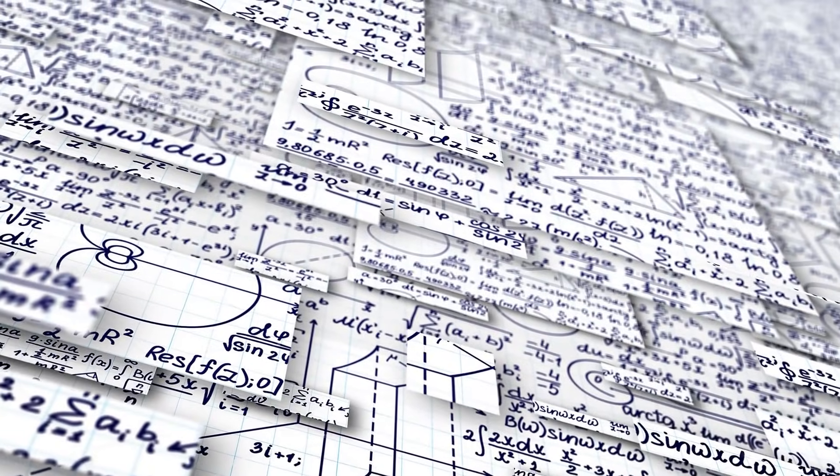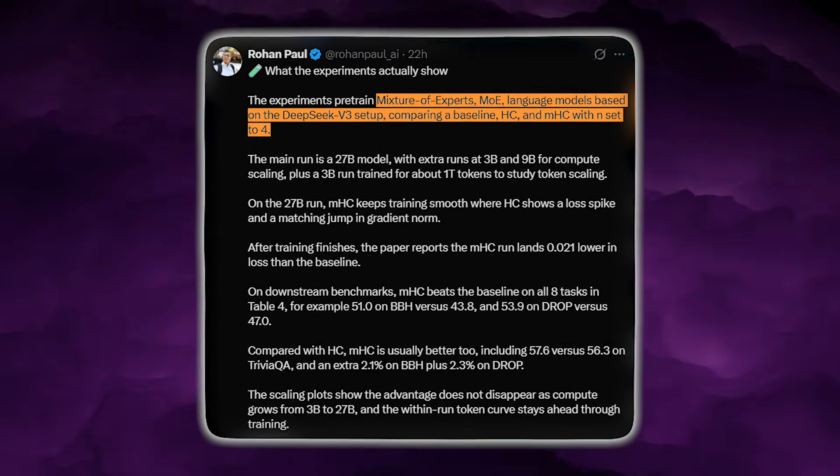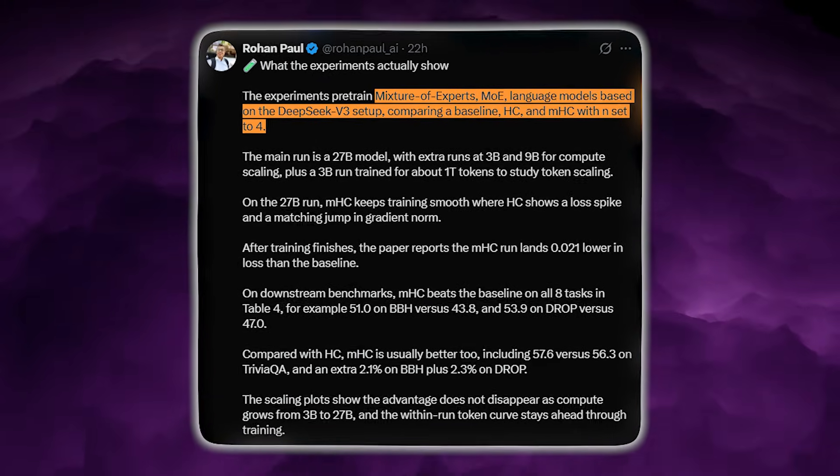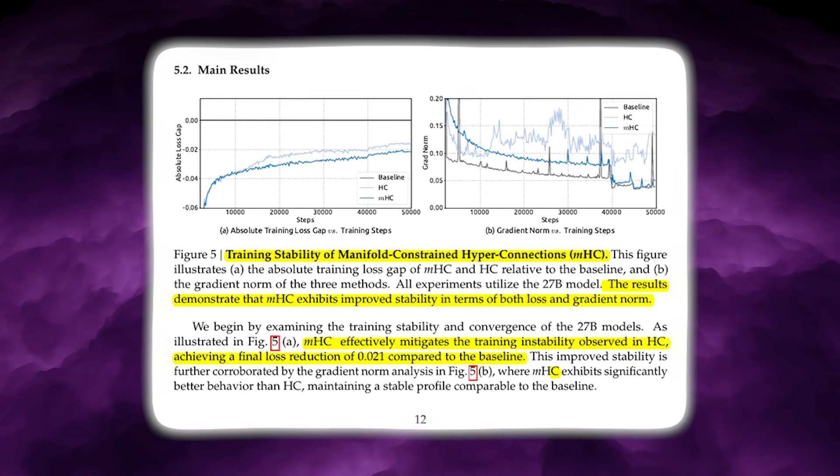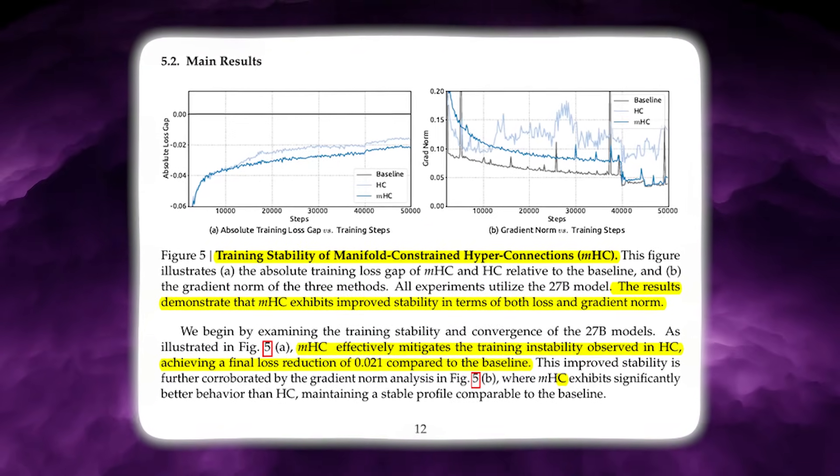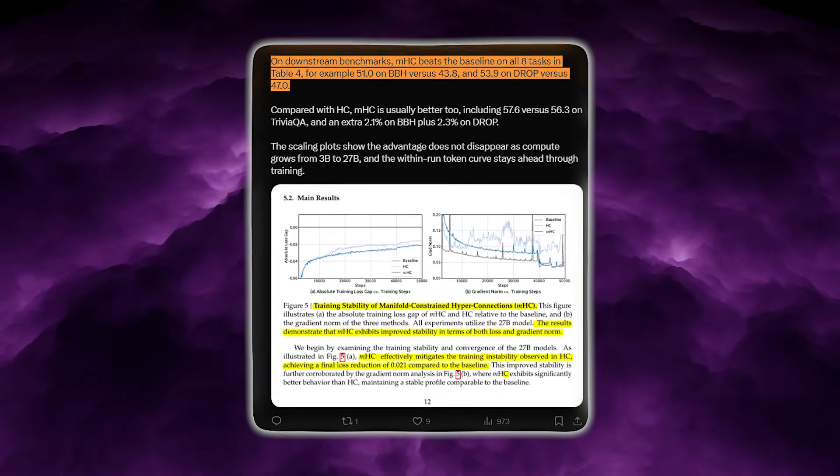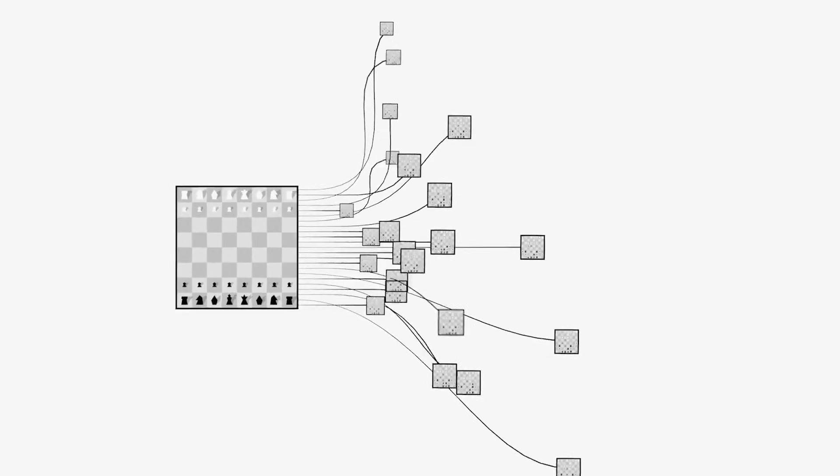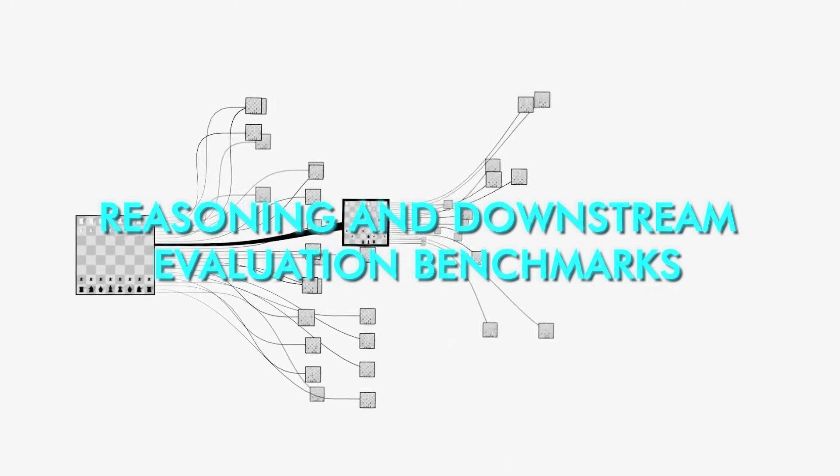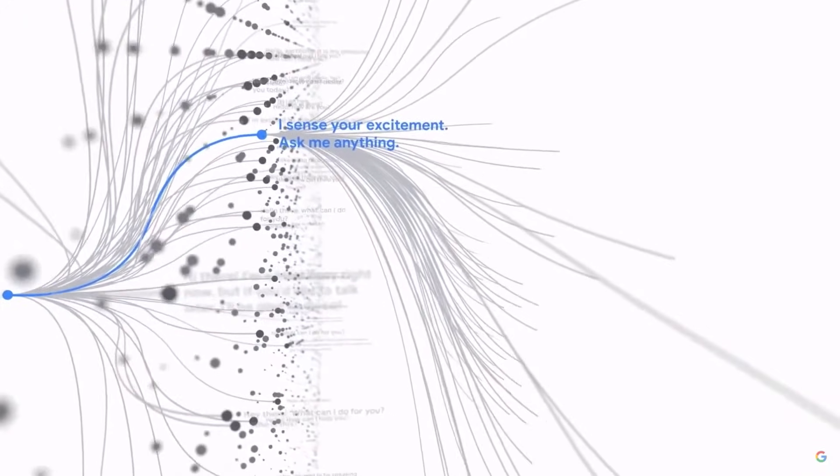Now for the results. They test MHC on models up to 27 billion parameters. These models use a mixture of experts, MoE, design inspired by DeepSeek V3. With N equals 4 residual streams, MHC beats the unconstrained HC variant on scalability, stability, and benchmark accuracy. The training overhead is only 6.7%. Loss goes down by 0.02 and improvements appear on reasoning and downstream evaluation benchmarks like BBH or DROP. They also show better memory efficiency because caching is reduced through kernel fusion and recomputation.